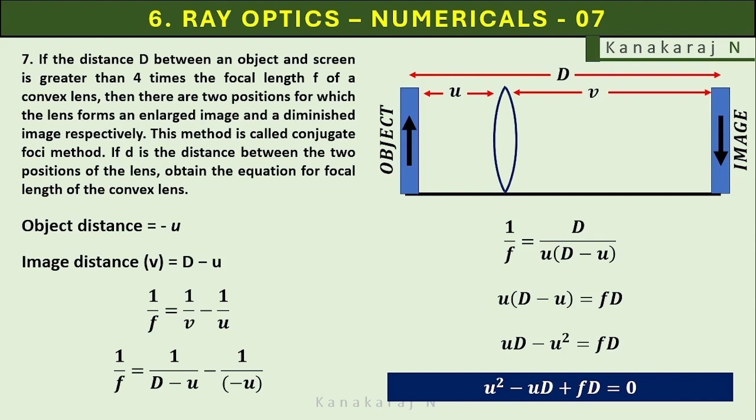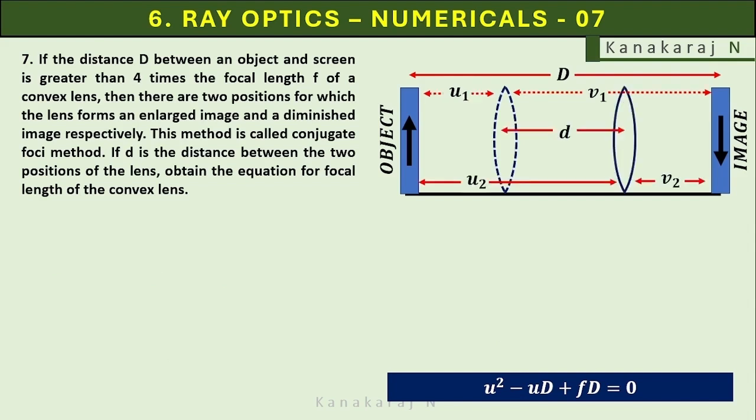We get two solutions u1 and u2. That is what I said earlier. So u1 is the first position of the lens and u2 is the second position of the lens.